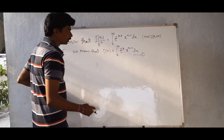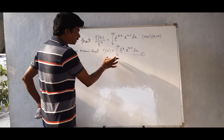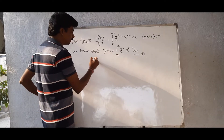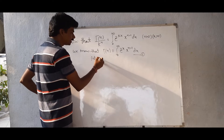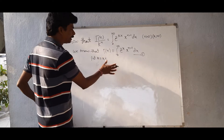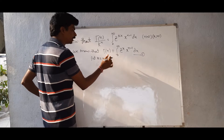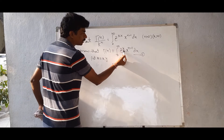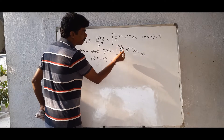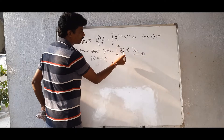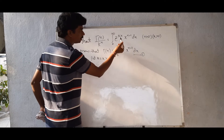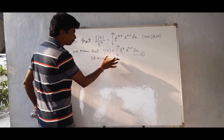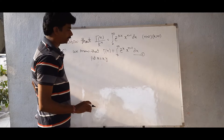Now put x equal to k into y. Why do we take x equal to k into y? Because comparing the two expressions, the coefficient of x here is minus 1 and here it is minus k, so we assume x equal to k into y.